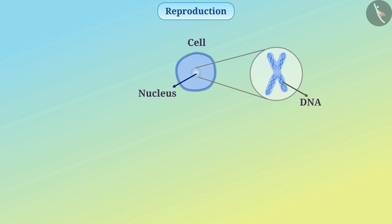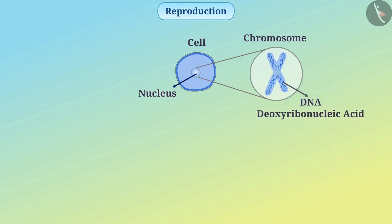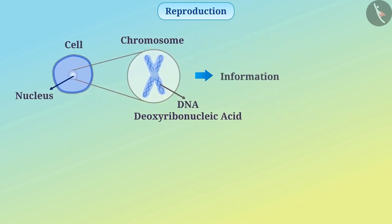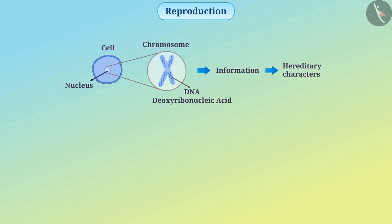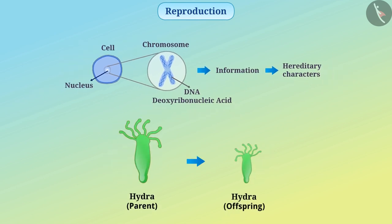Every cell contains a nucleus which is made up of chromosomes. The chromosomes contain DNA — deoxyribonucleic acid — that contains information of hereditary characters transmitted from parent to offspring. Because of this, the characters of offspring seem similar to the parents, and therefore every organism can produce an organism similar to it.